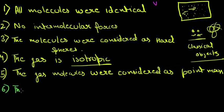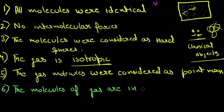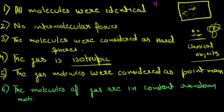The sixth assumption was that the molecules of a gas are in constant random motion — that means the molecules are always moving and are always excited to move.